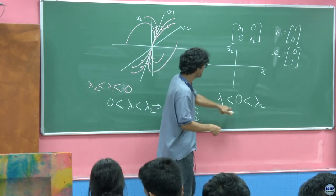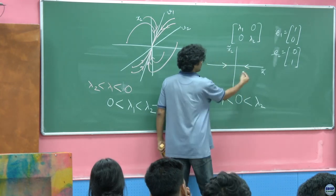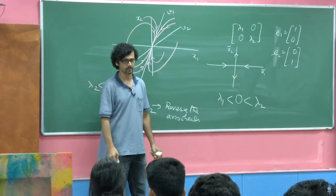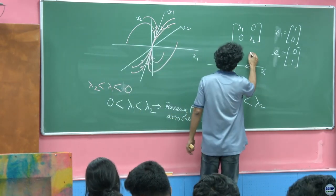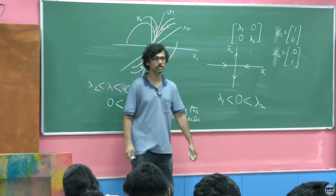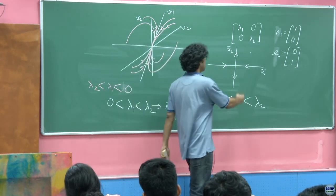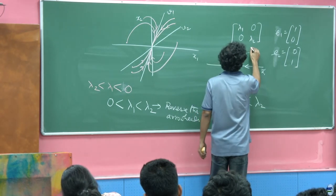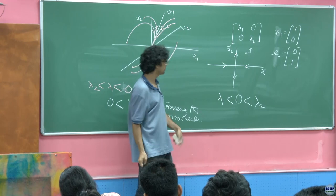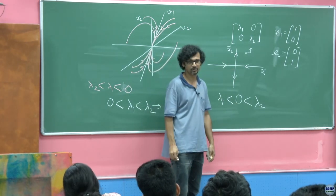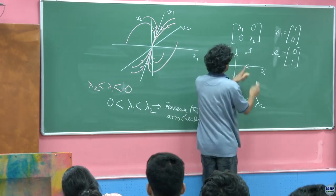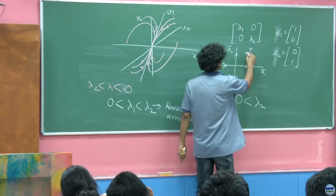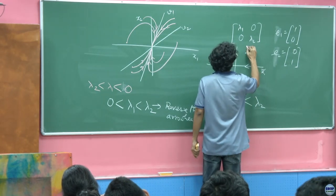Along x1-tilde, if you start from a point on this axis you tend to move toward the origin, whereas along x2-tilde you tend to move away. If you start from a point not on the principal axis, there is some attraction toward the origin along one direction and repulsion along the other. Treating x-dot as the velocity, the resultant is lambda 1 times x1 along one direction and lambda 2 times x2 along the other.